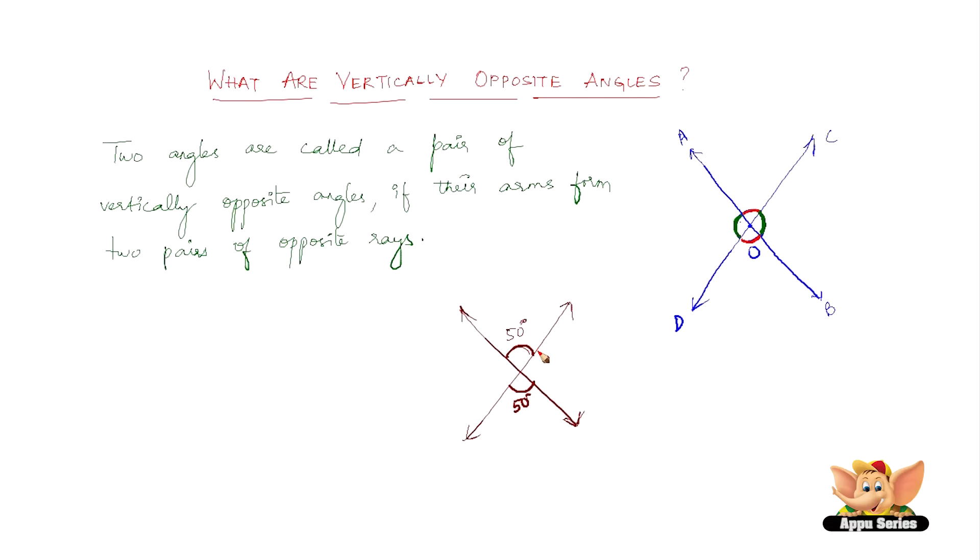How do you find these remaining angles? It's very easy because these two angles are equal. They are also vertically opposite angles. The angle around a point is 360 degrees and we already have two angles here. 50 plus 50 is 100, so the leftover is 260. Divide 260 equally between these two, we get 130 and 130. This is the concept of vertically opposite angles.